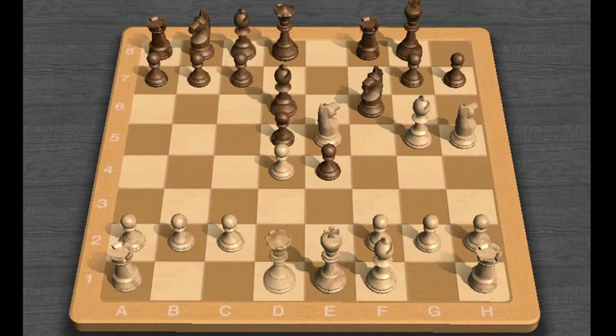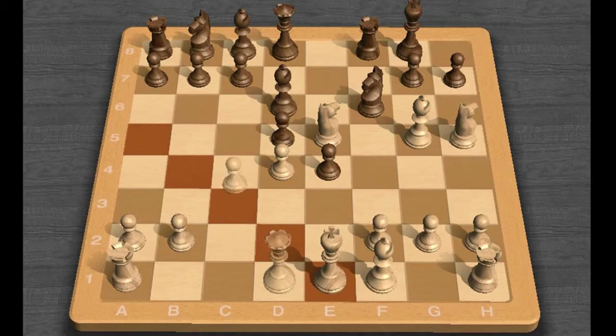White must be careful not to open up the A5, E1 diagonal with moves like C4, which will be hammered by Bishop B4 check.